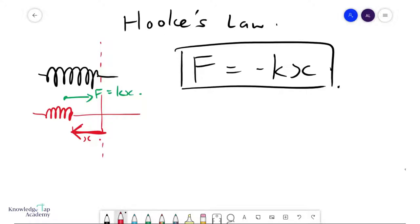Similarly, if you stretch this spring, like so, that's your x is now in this direction, but your force, of course, will be in this direction, also equal to kx. Notice that the force is always opposite to the direction of the extension, and hence the minus sign.